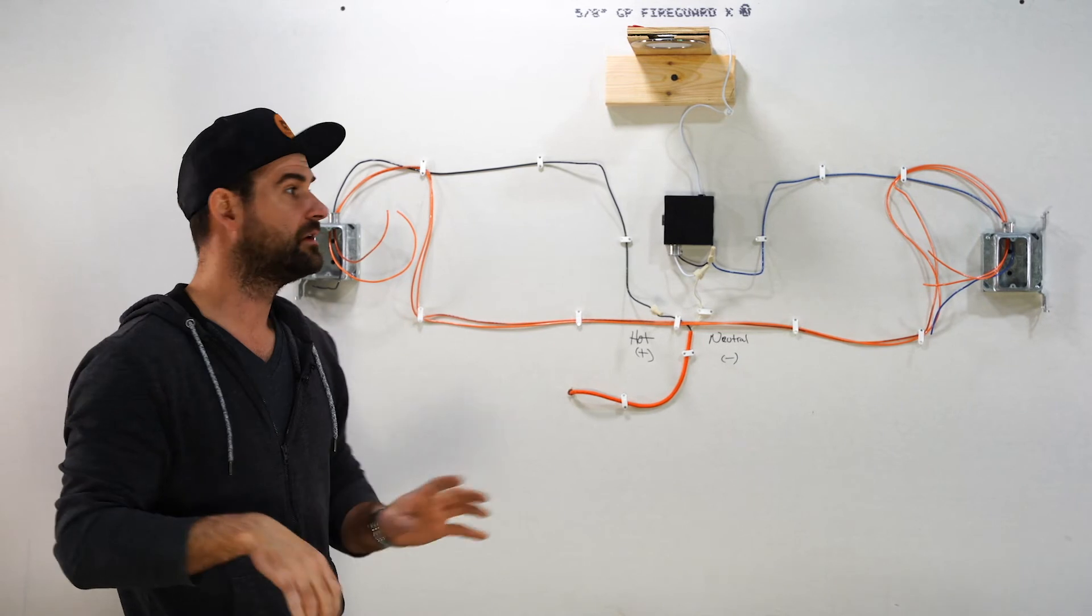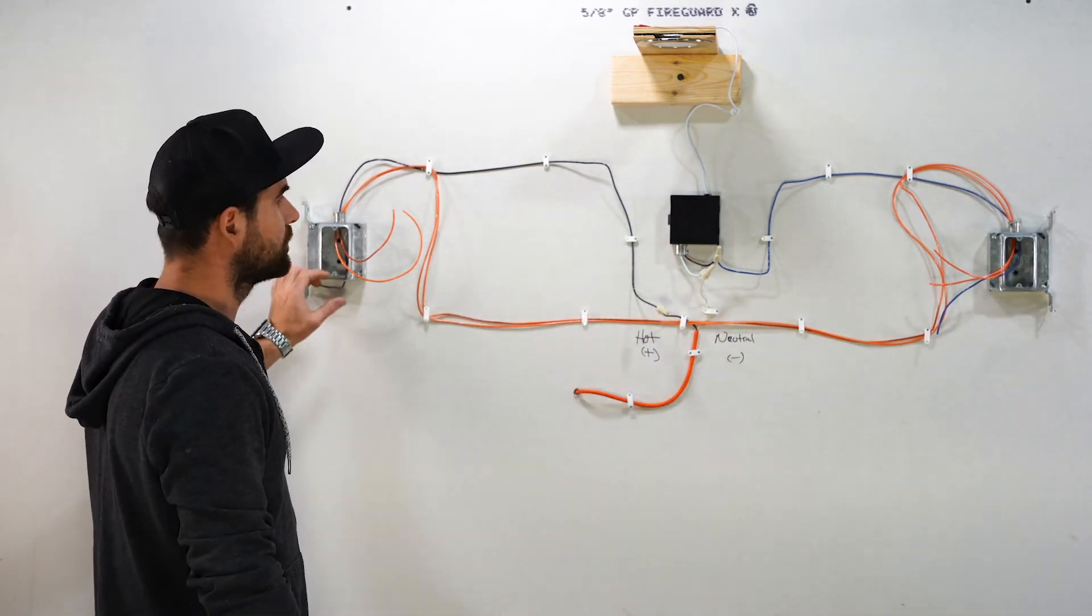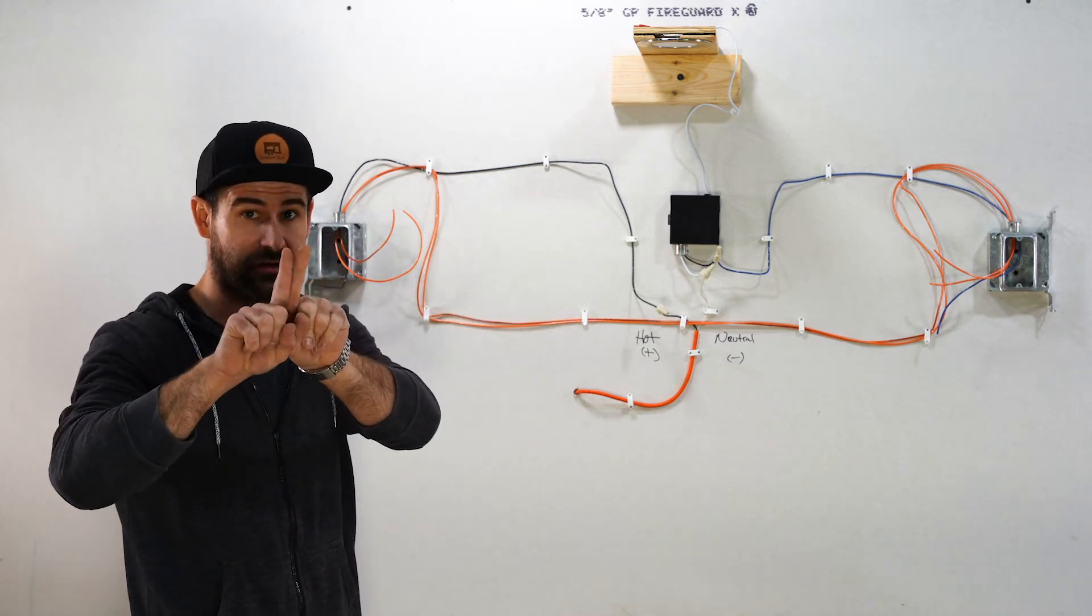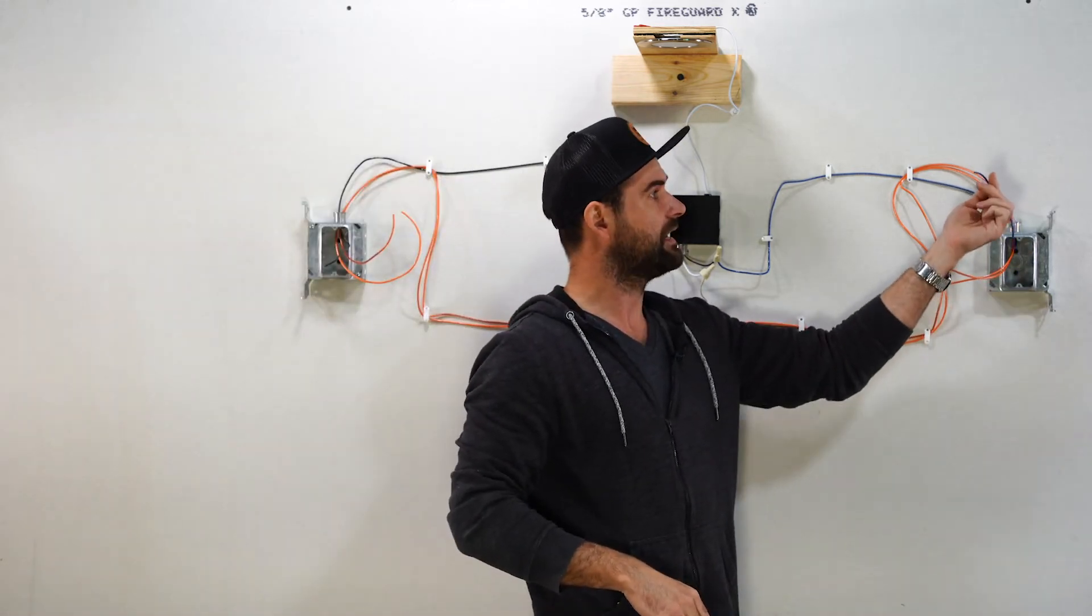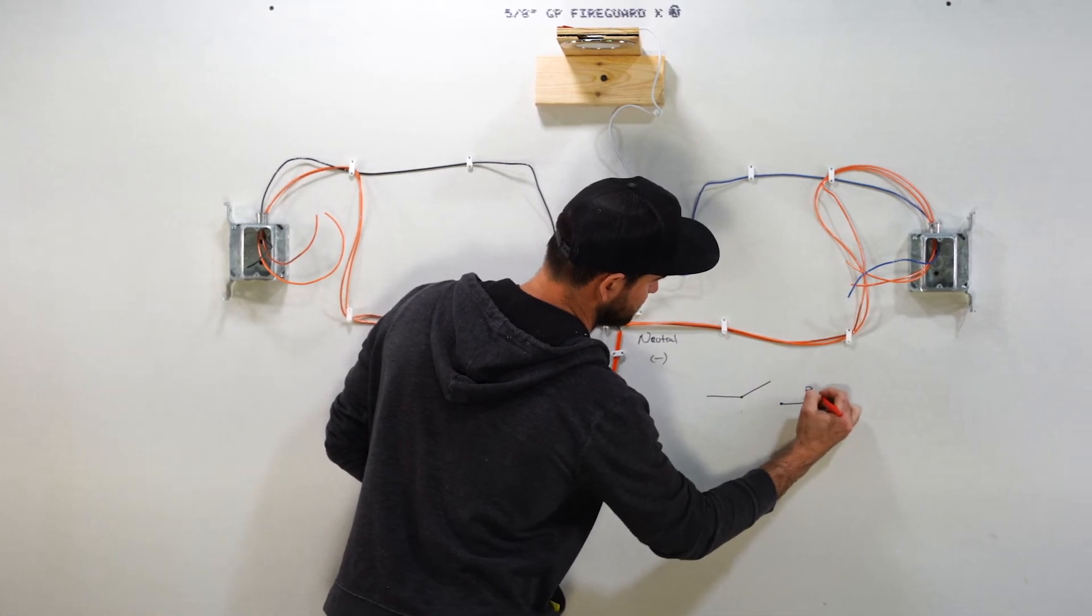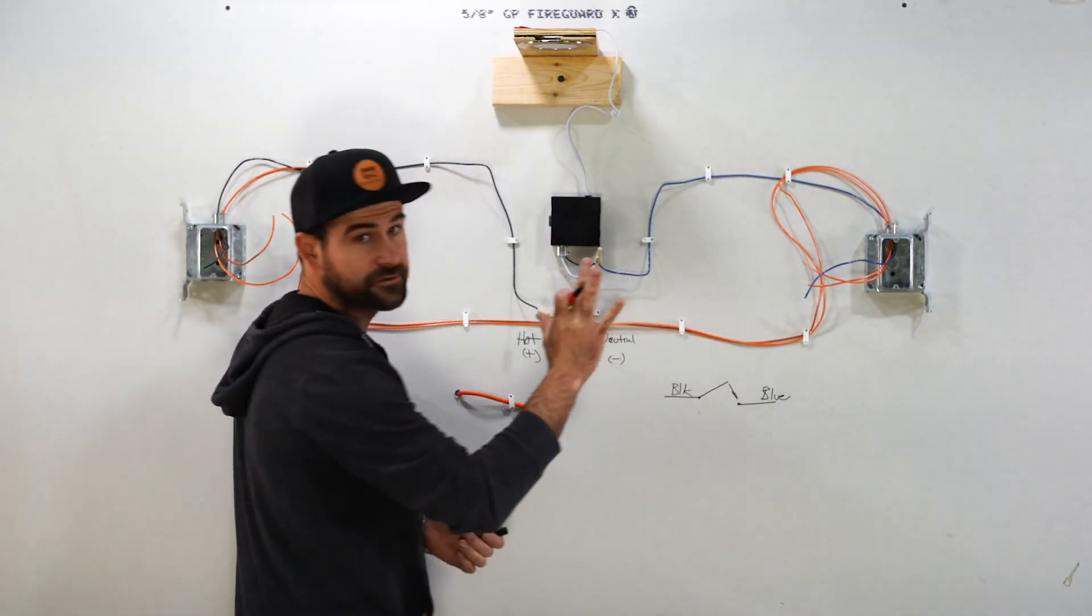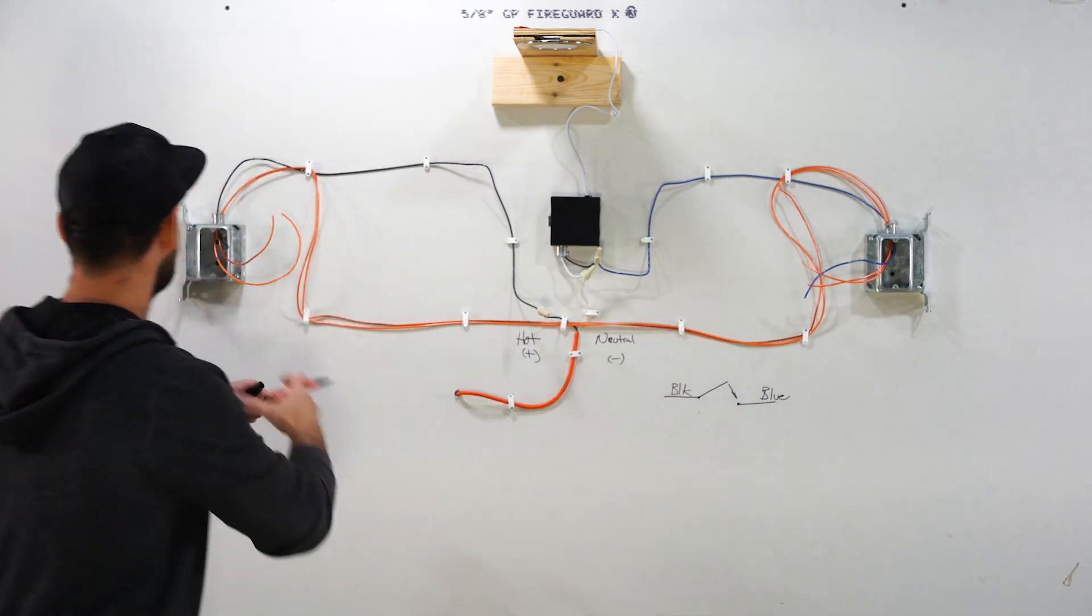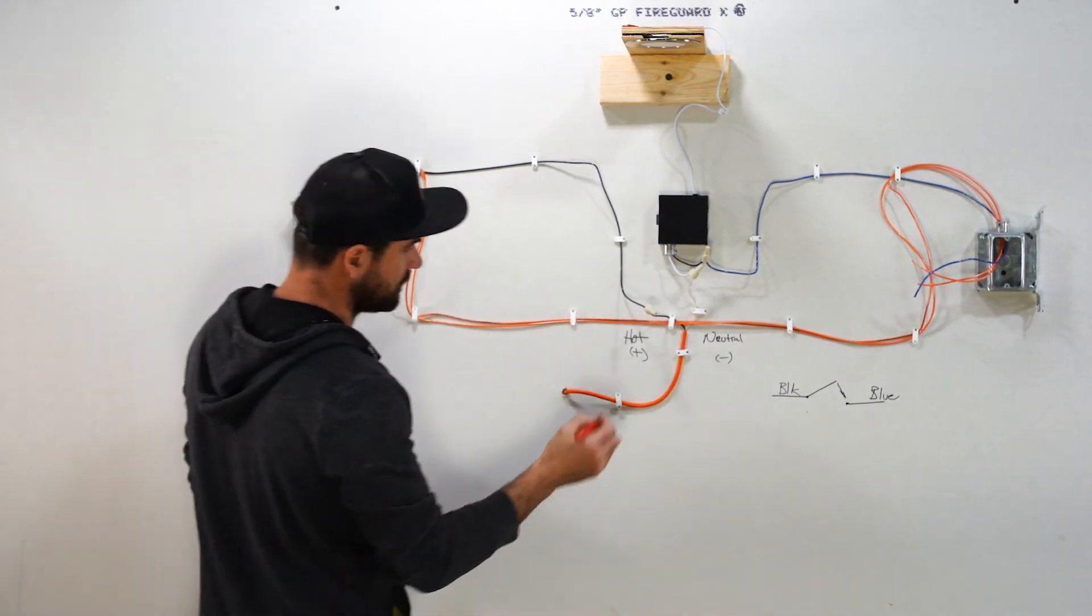So a couple of things that you need to know on how this whole process works. Now that we got it all wired, in a normal situation where you didn't have a three-way and you just have one switch controlling everything, then all you would have is you would have this black wire and you would have this blue wire. And when the switch, if this is our blue wire and this is our black wire, when this closes the light will turn on in a normal single location.